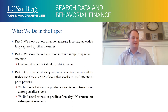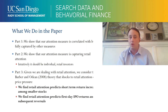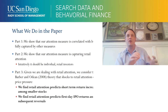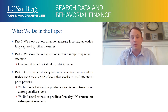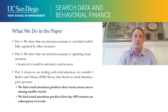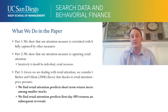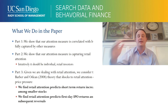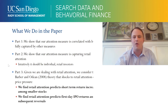A brief summary of what we do in the paper: Part one, we show our attention measure is correlated but not fully captured by other attention measures. We also show our attention measure captures retail attention — we look at retail brokerages and find strong correlation with volume traded over those brokerages. Given that we're dealing with retail attention, we consider the Barber and Odean theory: shocks to retail attention create price pressure, pushing prices up temporarily, and then they fall back down. We find retail attention predicts short-term increases in small stocks and in IPOs.